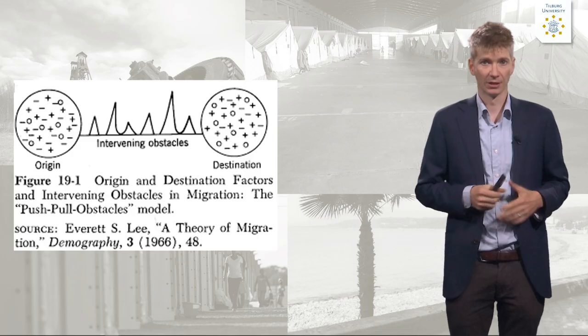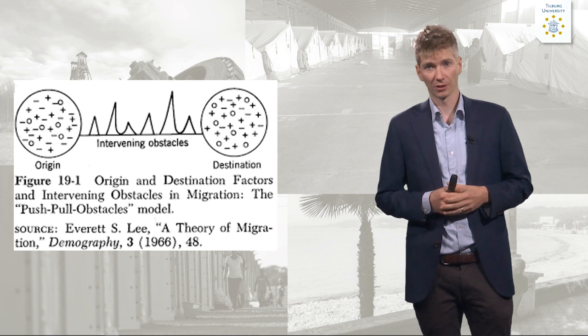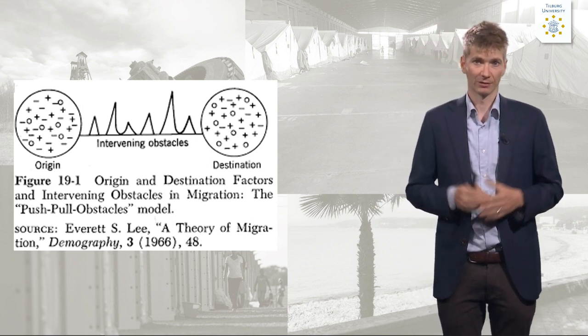So altogether, push-pull theories are relatively simple but very popular and very often used in migration studies. There is a push factor, there is a pull factor, and then there is Everett Lee's important adaptation, which explains why there is variation and why push and pull factors do not work for everybody — because personal characteristics and intervening obstacles act as a filter on migration decisions. Thank you for watching this knowledge clip on international migration push-pull theories.